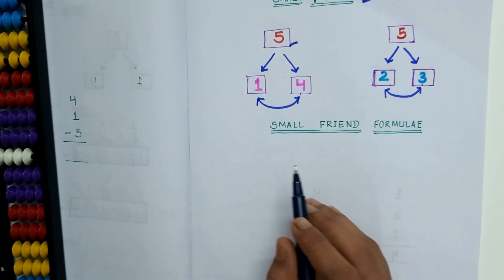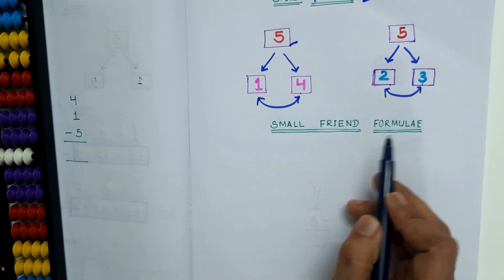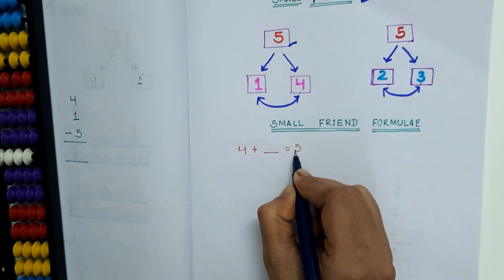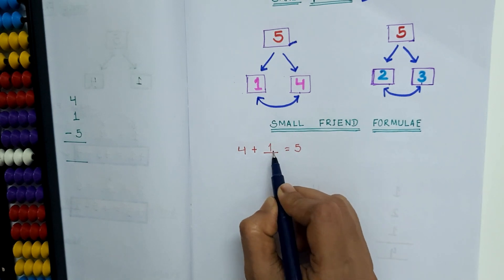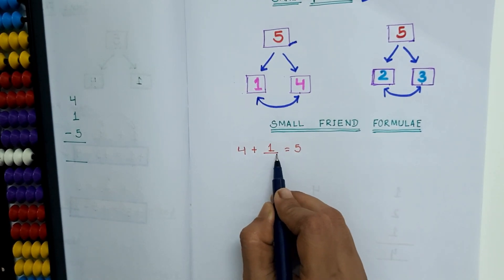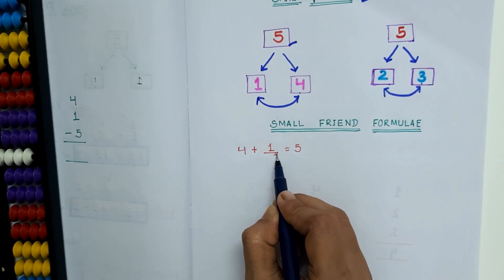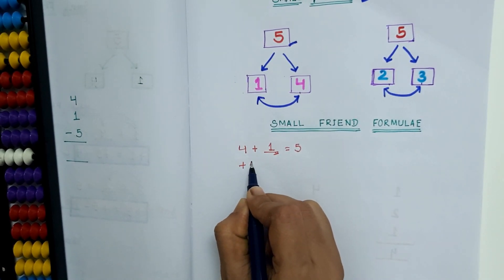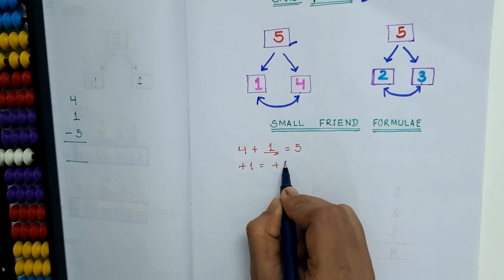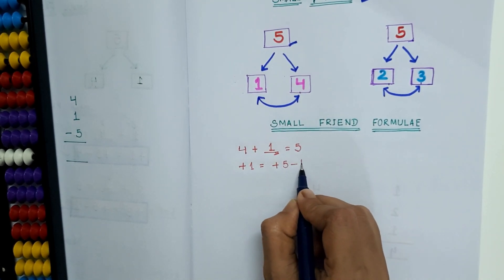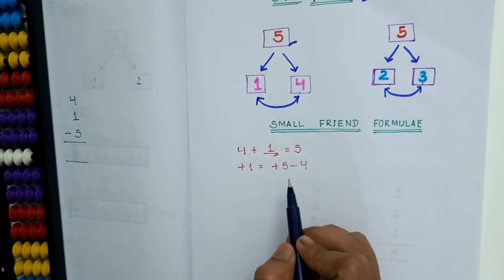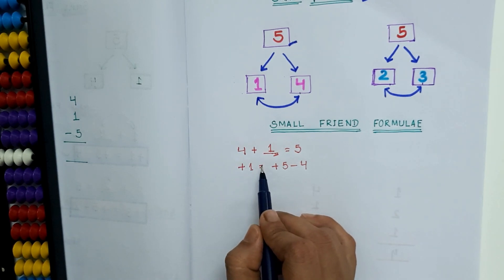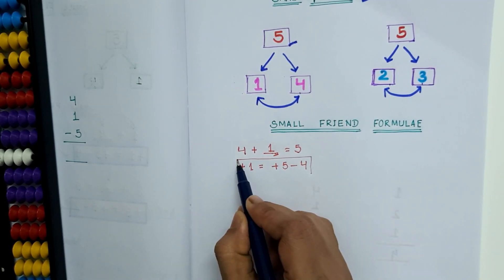Is it clear? Now let's derive the small friend formula. 4 plus how much equals to 5? 4 plus 1 equals to 5. How do we get the answer 1? We have to subtract 4 from 5. So plus 1 equals to plus 5 minus 4. Now we have got the first formula: plus 1 equals to plus 5 minus 4.